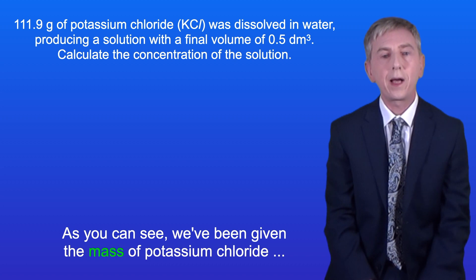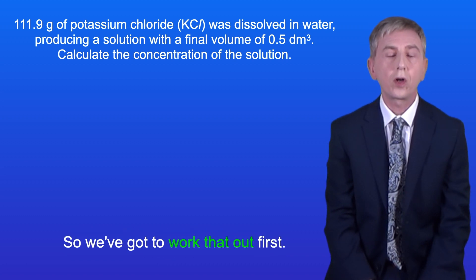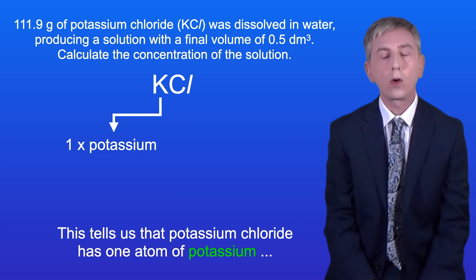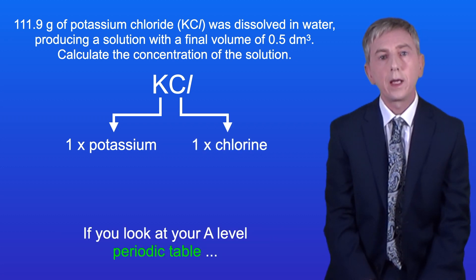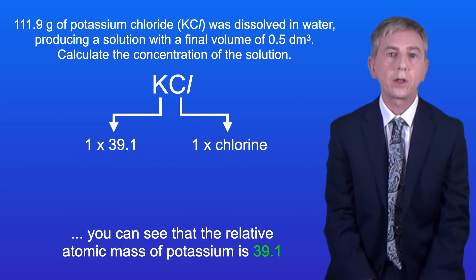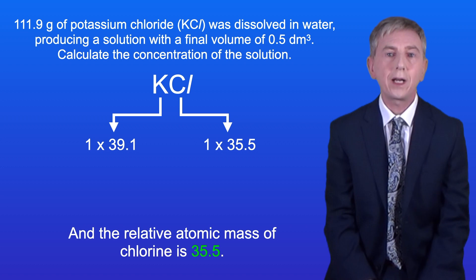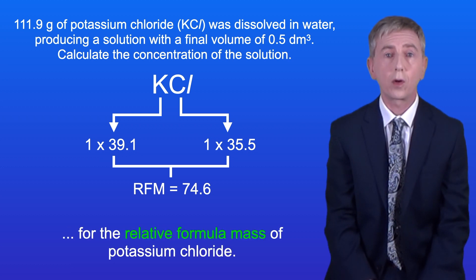As you can see, we've been given the mass of potassium chloride but not the amount of substance in moles, so we've got to work that out first. The formula of potassium chloride is KCl, which tells us it has one atom of potassium and one atom of chlorine. From the A-level periodic table, the relative atomic mass of potassium is 39.1 and the relative atomic mass of chlorine is 35.5.